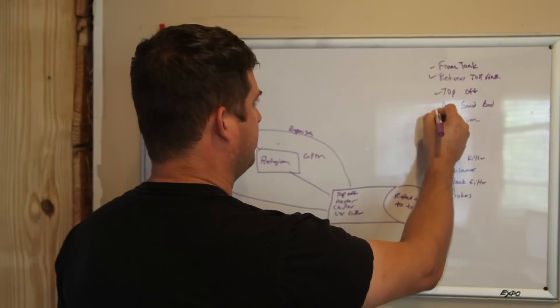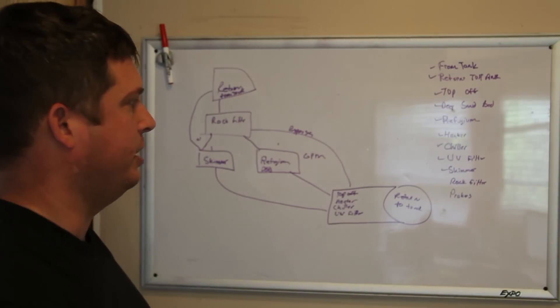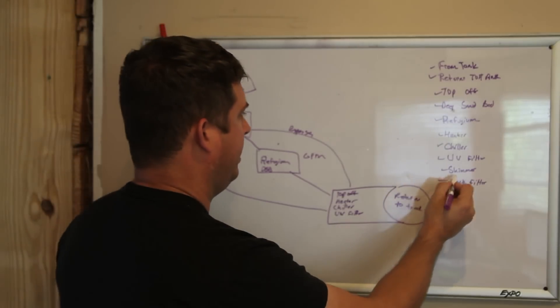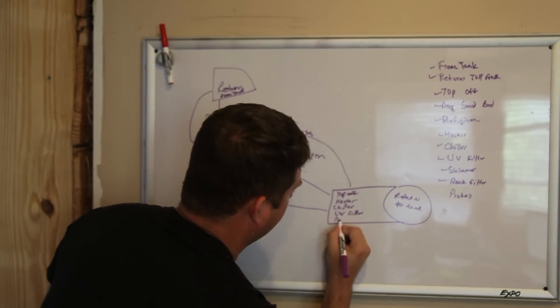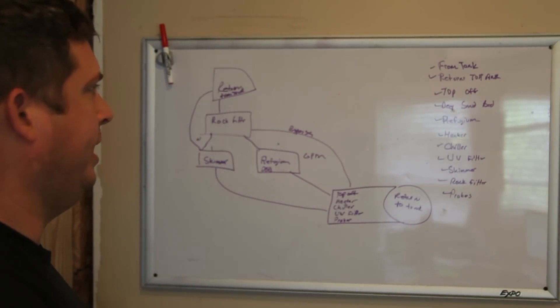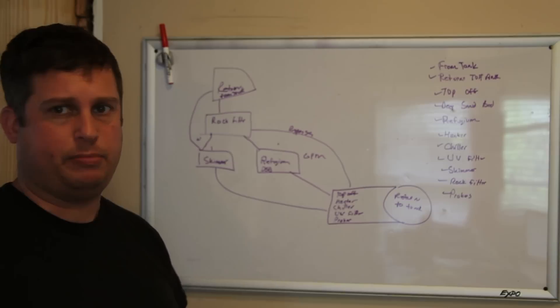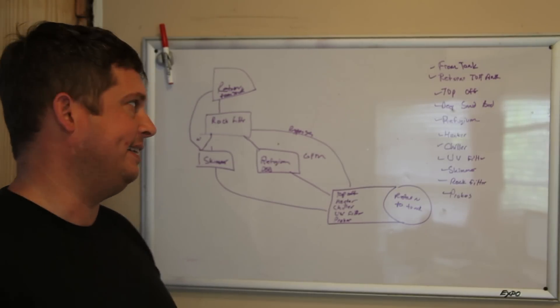My refugium is on there. My deep sand bed will be part of my refugium, so that kills two birds with one stone. I have my rocks, and of course my probes are going to go in here, so that's something else I need to consider when I design this. And again, this list of components is specific to my tank; your list may be slightly different.